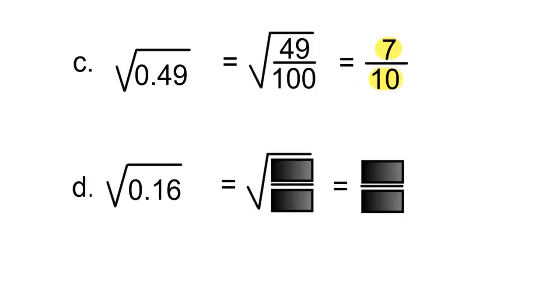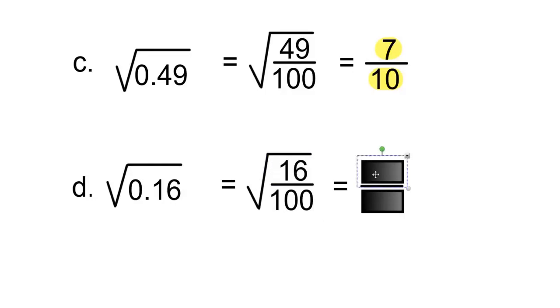And what is the square root of 0.16? The last digit, which is a 6, is in the 100s column, therefore it's out of 100. The numerator will be 16. The square root of 16 is 4, and the square root of 100 is 10, so the answer is 4 over 10.